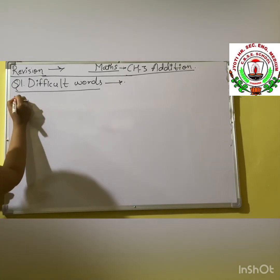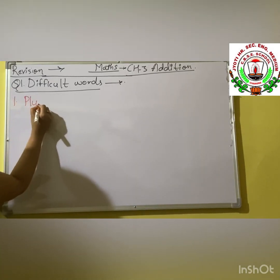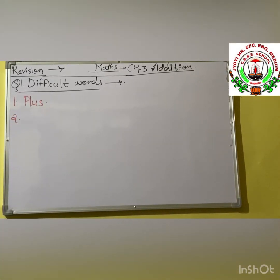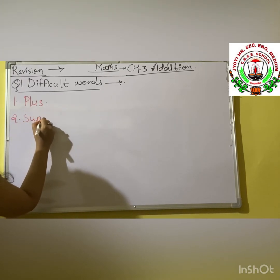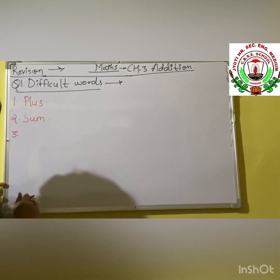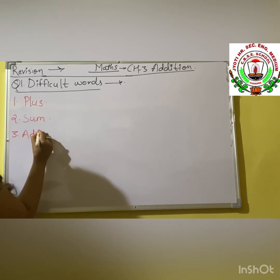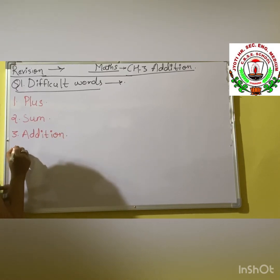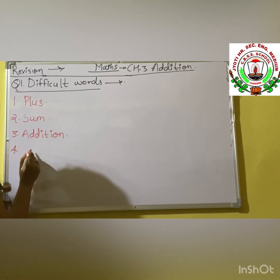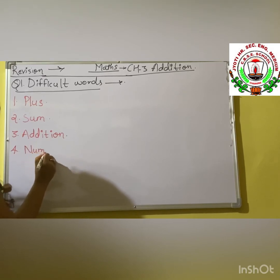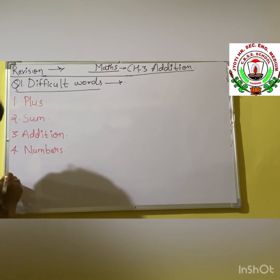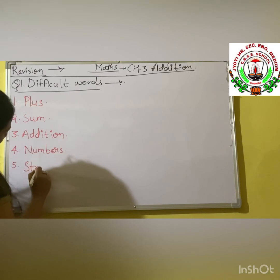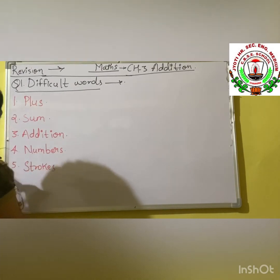Hope you all are studying. First one is: plus. Second one is: sum — S-U-M. Third one is: addition — A-D-D-I-T-I-O-N. Fourth one is: numbers — N-U-M-B-E-R-S. And fifth and last one is: strokes — S-T-R-O-K-E-S.